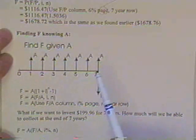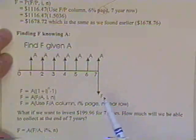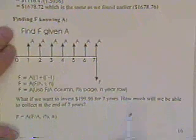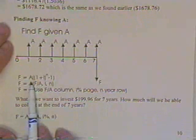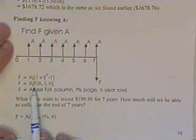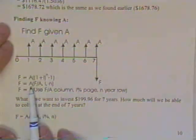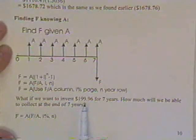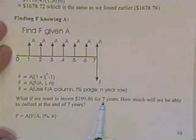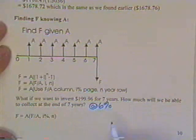But when you walk out of the bank, you'll have the one you've gathered for this year. And what total future value would you have? The formula for that is A times (1 plus i) to the N minus 1, or in economics notation, we would say A times F over A. So what if we want to invest $199.96 for seven years at 6%, how much will we be able to collect at the end of seven years?